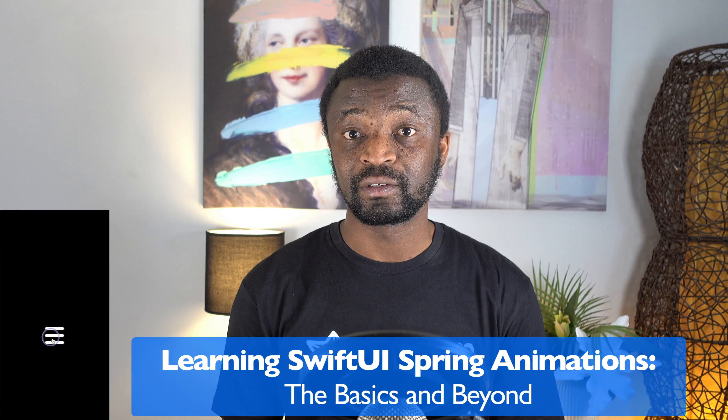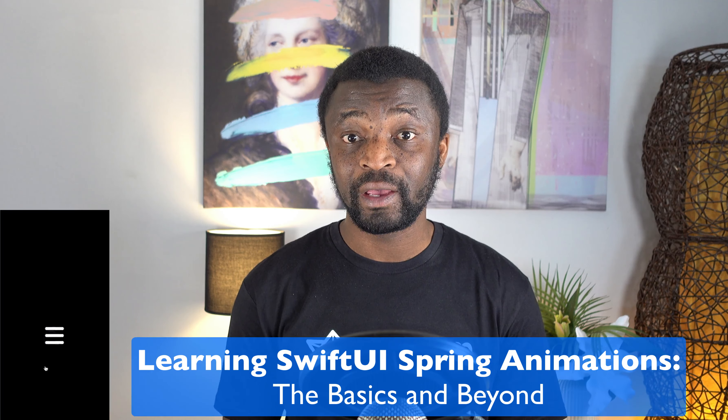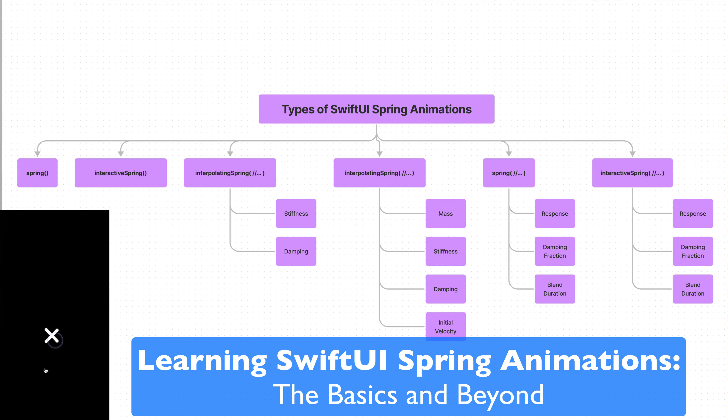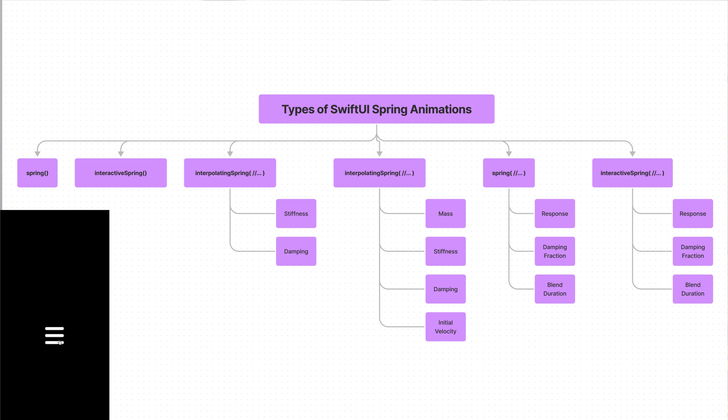In this episode of the Stream Developers SwiftUI series, you will learn about an animation that applies a spring-like force to a view's properties — enter spring animations. In SwiftUI, there are six different kinds of spring animations, and in this video we will explore all the various kinds of spring animations and their parameters.